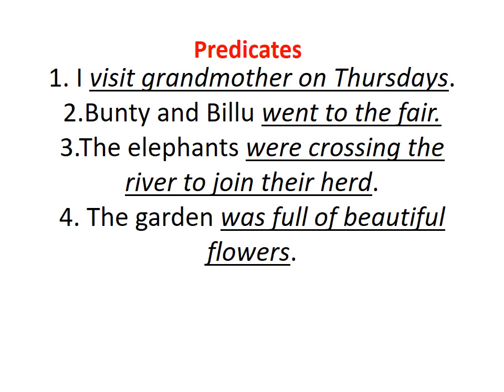Another example: 'The elephants were crossing the river to join their herd.' What were the elephants doing? Their action was crossing the river to join their herd — so that is the predicate. 'The garden was full of beautiful flowers.' Here we are giving information about the garden. The verb is 'was,' and 'was full of beautiful flowers' is the predicate.